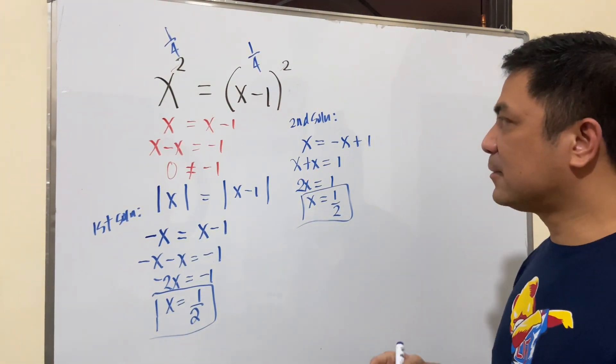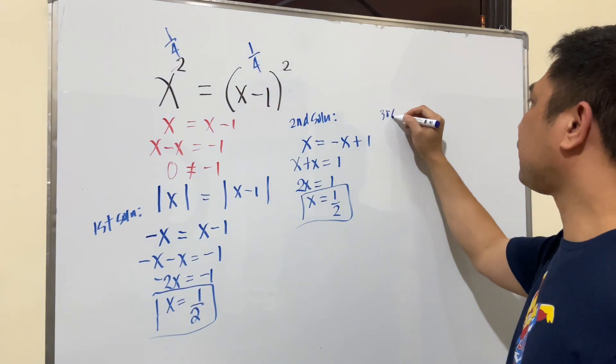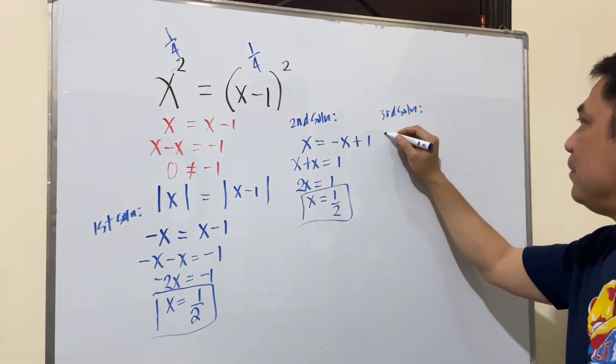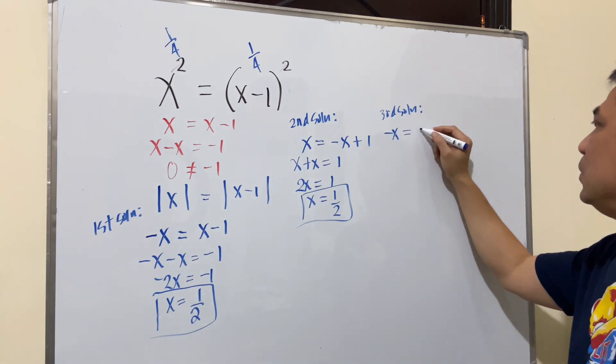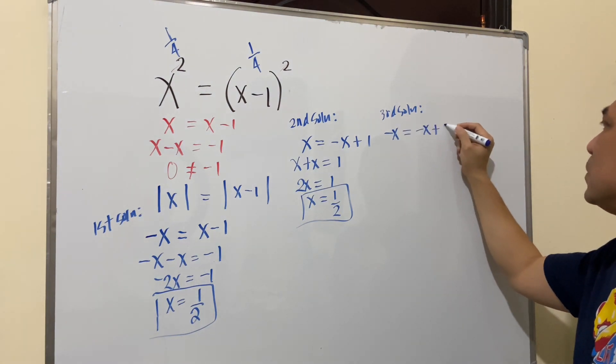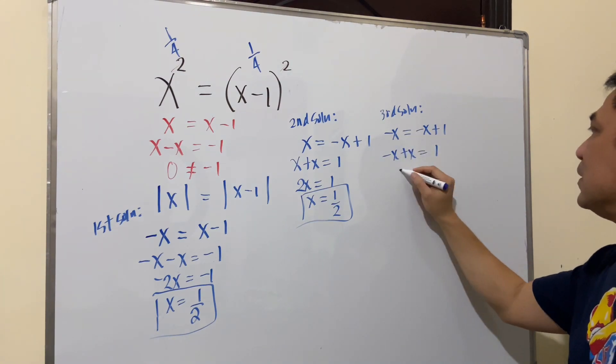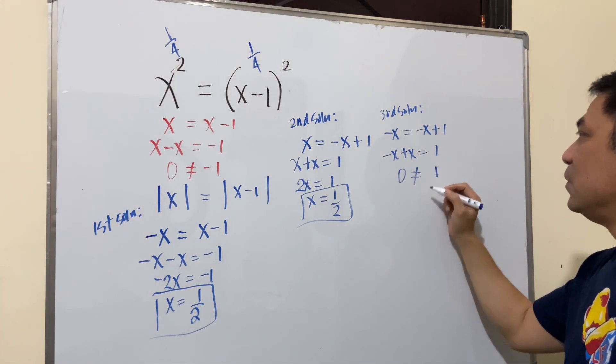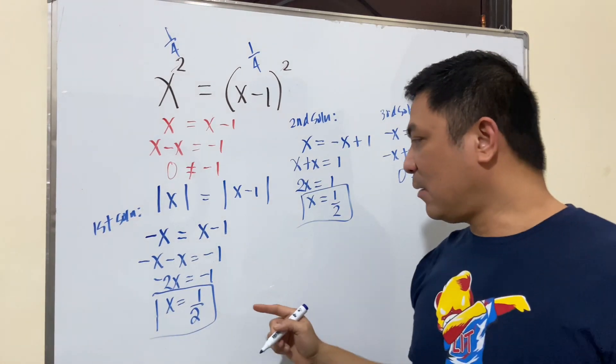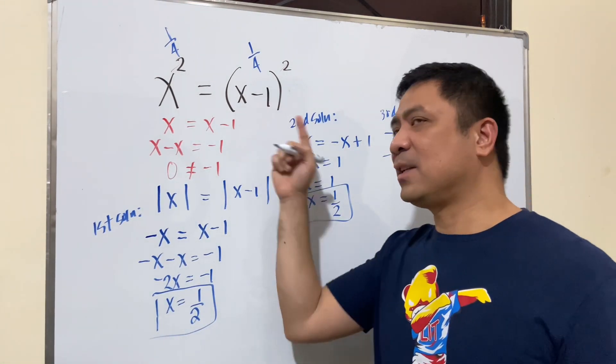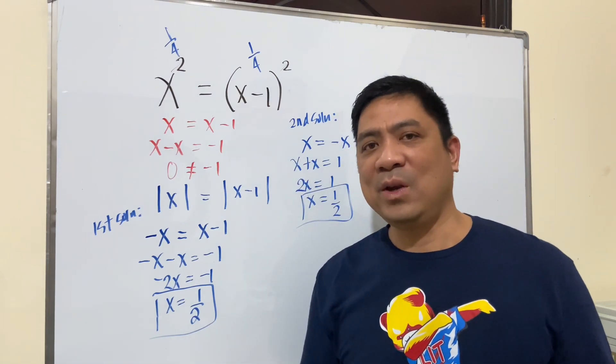What if we will change both of them? Third solution. So that means if you have negative x is equal to negative x plus 1. So negative x plus x is equal to 1. So 0 is not equal to 1. So therefore, our answer here should be x is equal to 1 half to satisfy this equation.